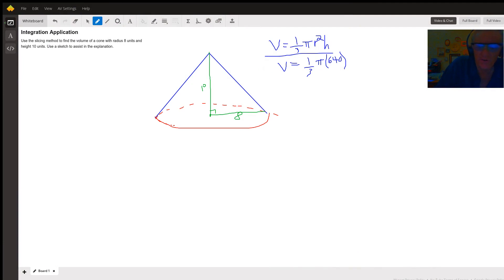For the volume of a right circular cone, volume equals one-third pi r squared h. If we substitute in these known values, a height of 10 and a radius of 8, then we get 640 pi over 3 cubic units.